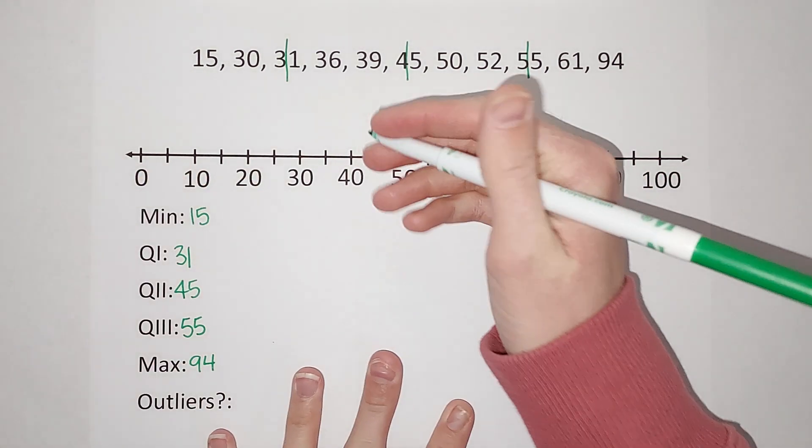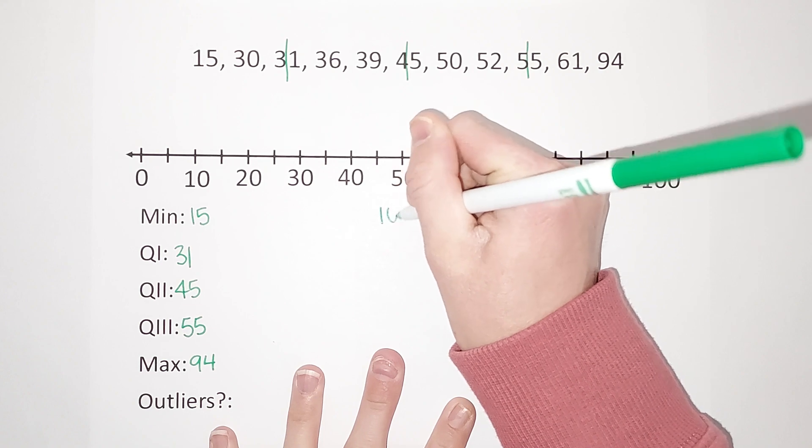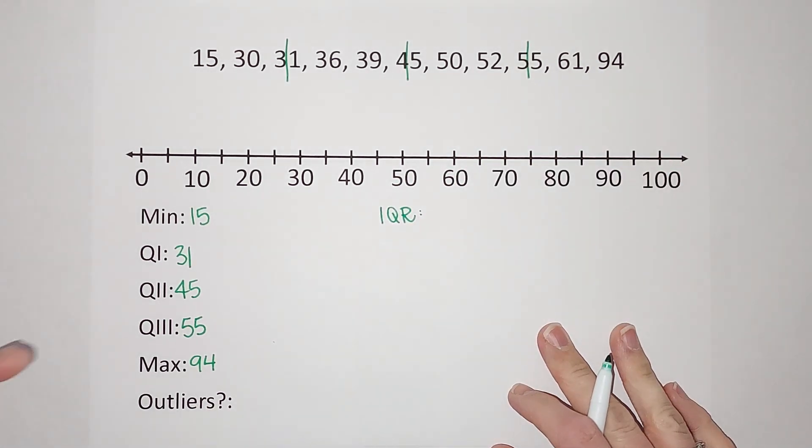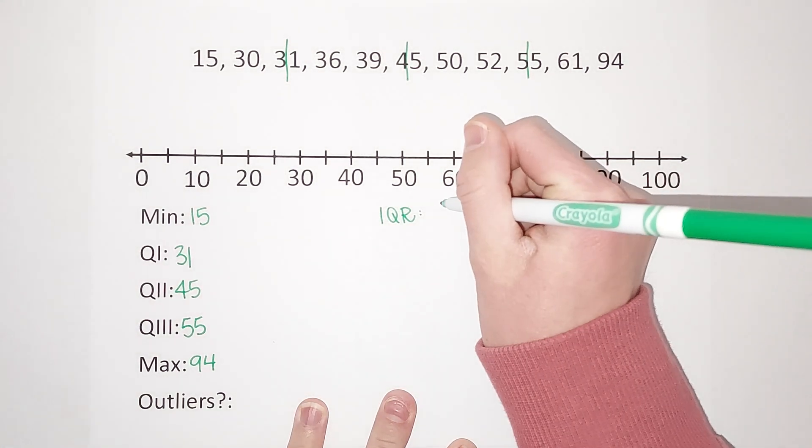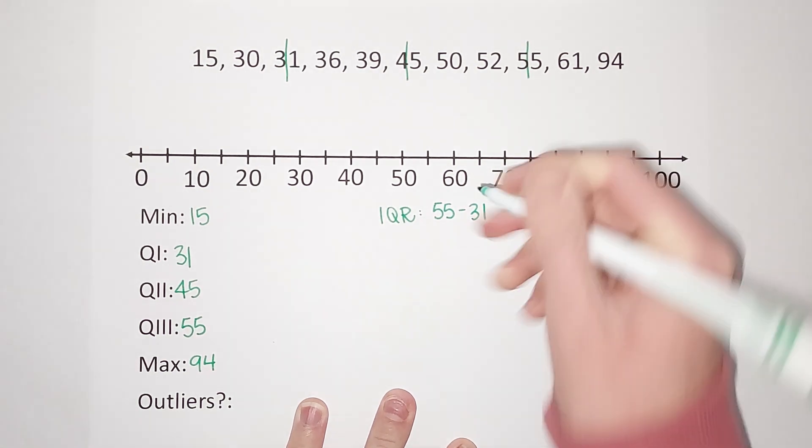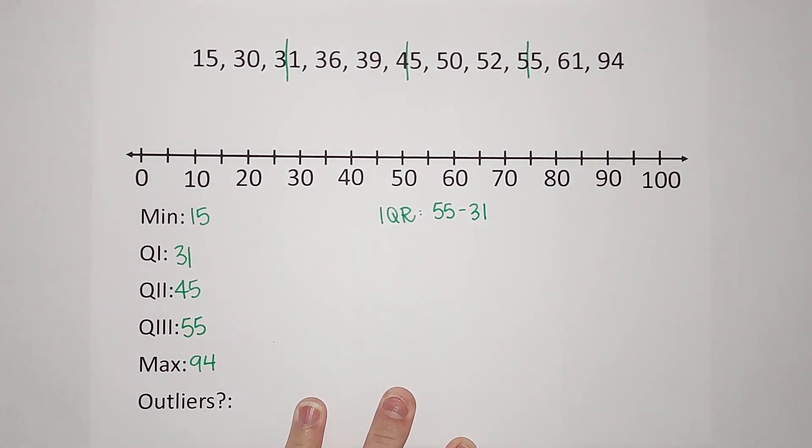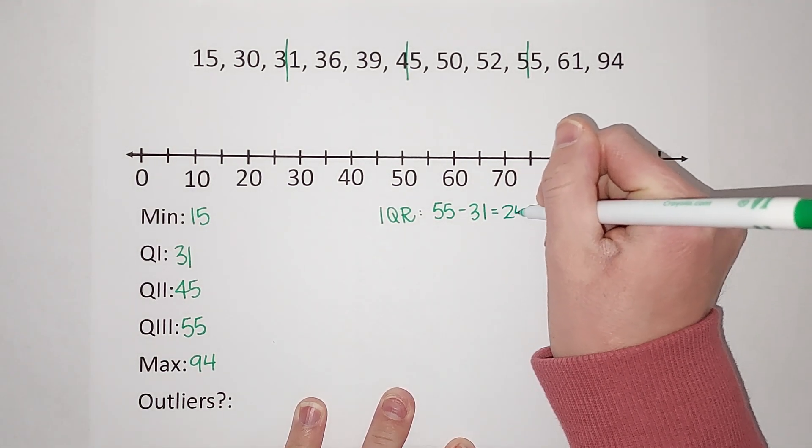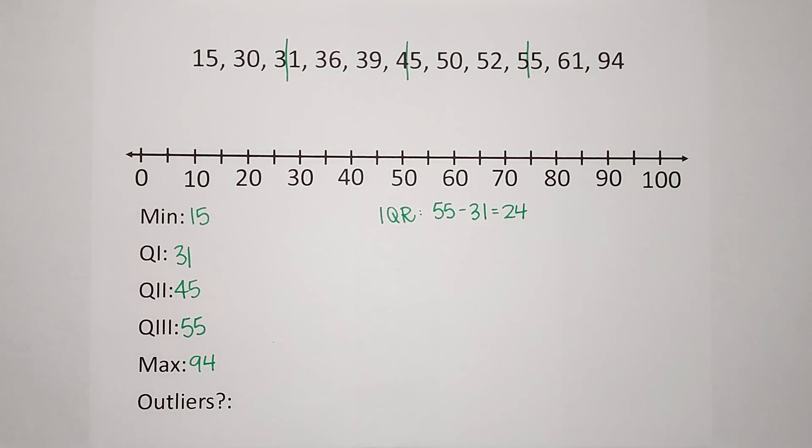To find outliers, we are going to take our IQR, which is our inner quartile range, which is quartile 3 minus quartile 1. So 55 minus 31 gives me my inner quartile range. 55 minus 31 is 24.